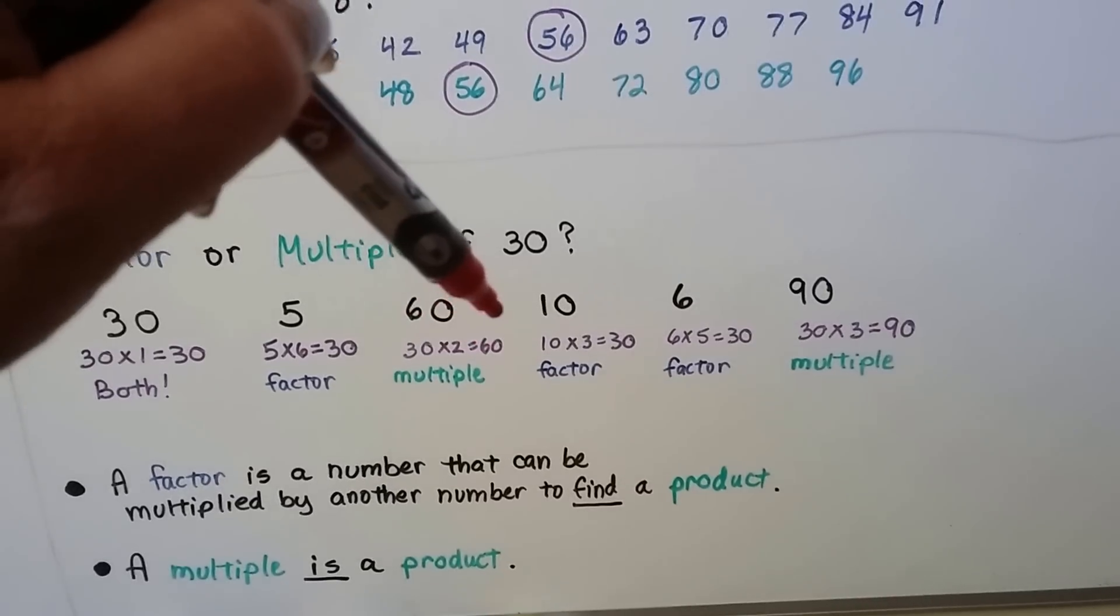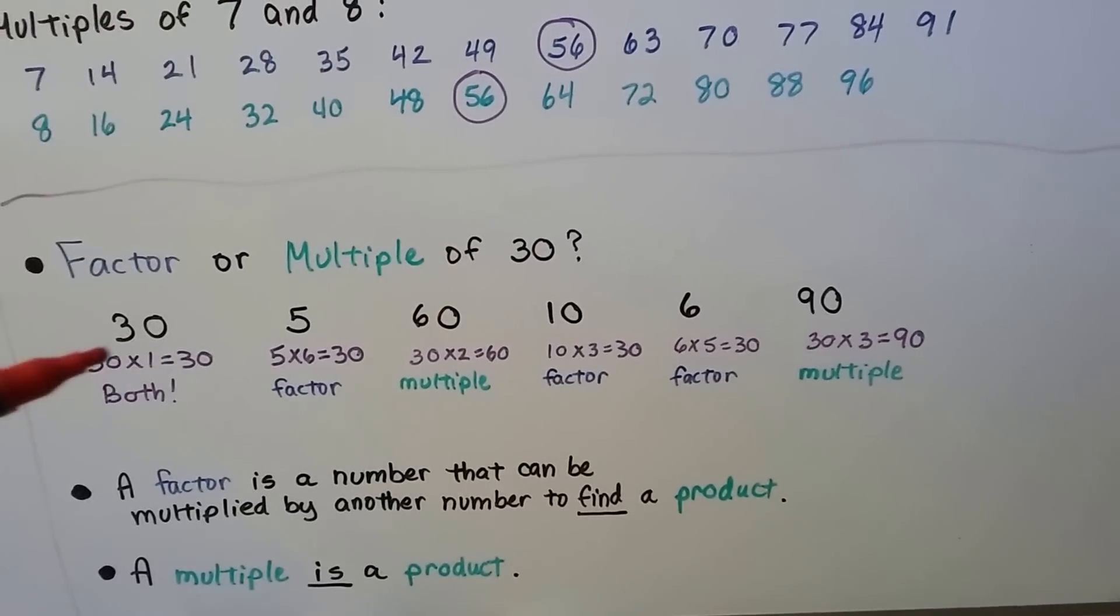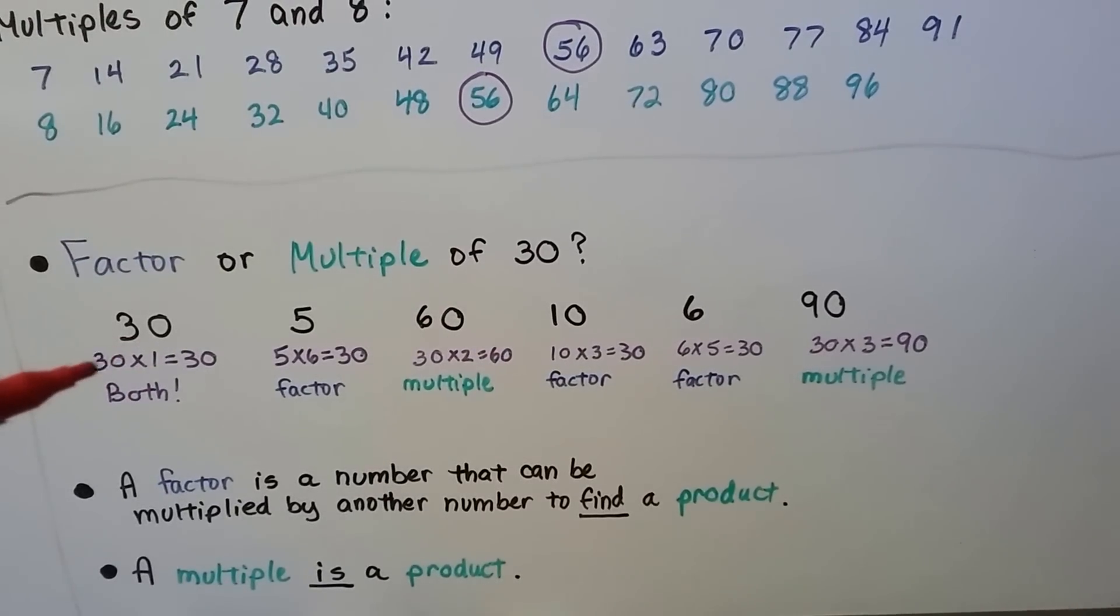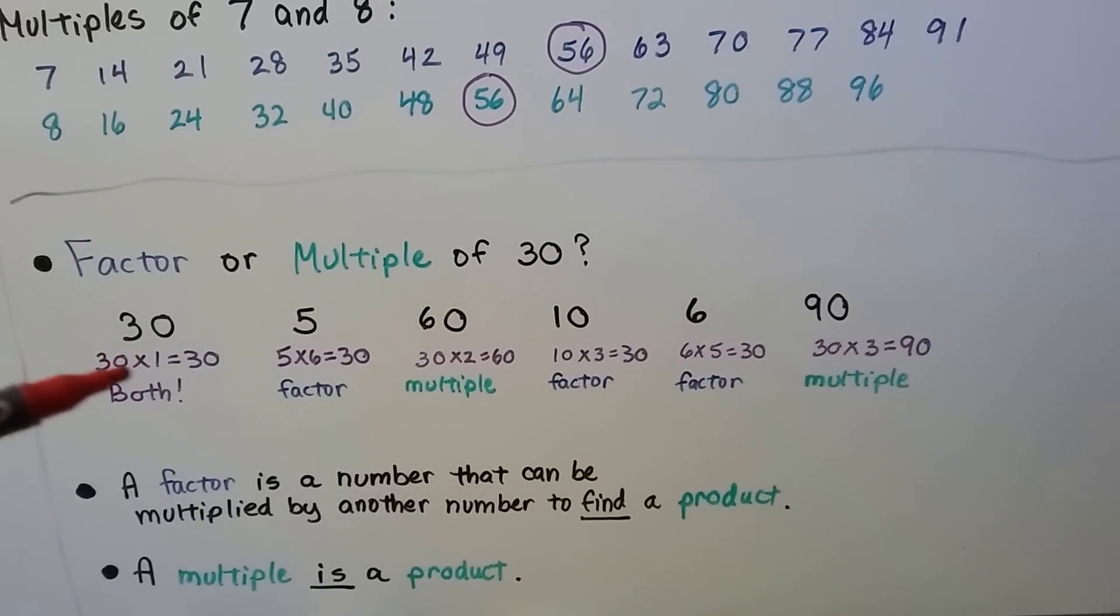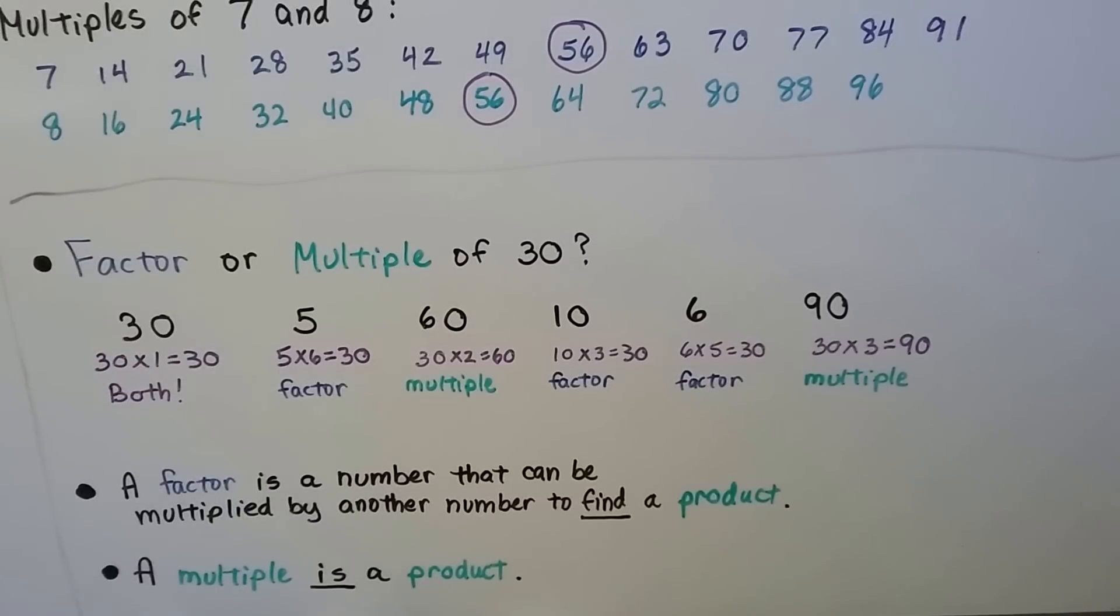So if it's a product, then it's a multiple. If it's one of the multiplicands or the factors, they're going to be inside the problem. They're what's multiplied together.